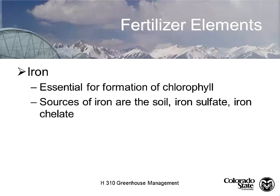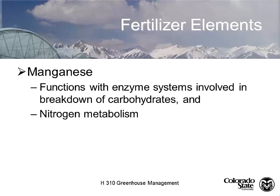Now jumping into micronutrients. Iron is essential for chlorophyll and many enzymes. Critically, iron availability changes with the pH of your root substrate — at low pH iron is readily available, but at high pH it becomes limited. So you can have plenty of iron in the soil, but if the pH is wrong, it becomes limiting. Manganese is another divalent cation involved in enzyme synthesis and required for nitrogen metabolism.